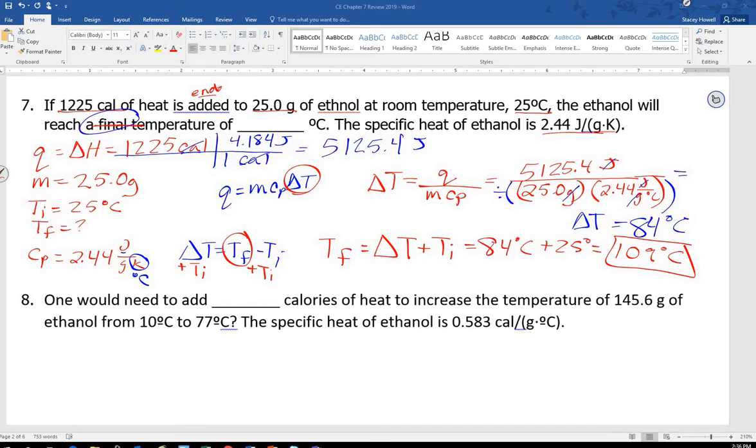And since temperature was only to the ones, that's all I need is 84. So 84 degrees equals delta T, right? That's not what they asked though, they wanted the final temperature. So now I'm going to use this equation. Tf becomes delta T plus Ti. So I'm plugging in, delta T was 84 degrees, Ti was 25 degrees, and I end up with 109 degrees Celsius as my final temperature.